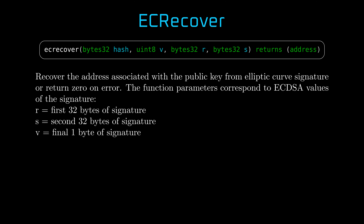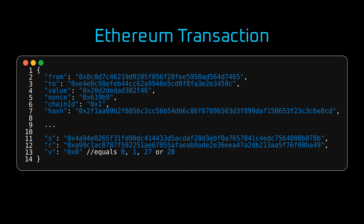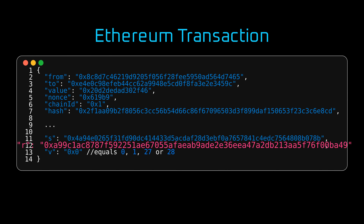Did you ever wonder what they do? Similarly, an Ethereum transaction has a number of fields — and then there are S, R, and V. What do they do? And why does V accept such a bizarre set of values: 0, 1, 27, and 28?